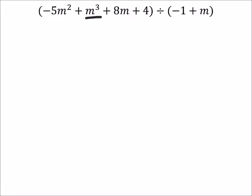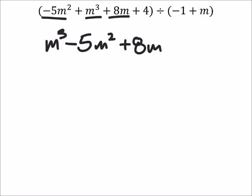So let's start with our m³ here. That's our highest degree. The next highest degree is m², so -5m². And we got the 8m, and then our constant, just a +4.